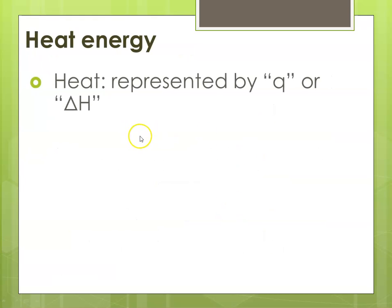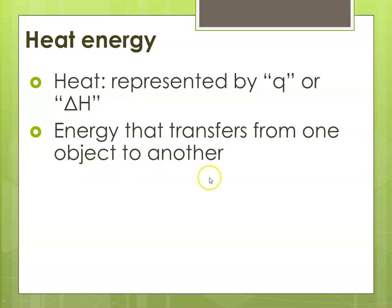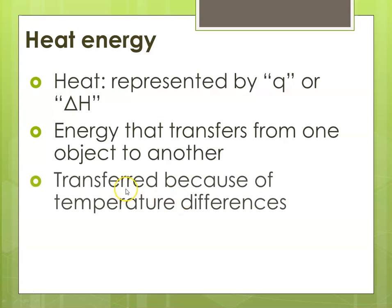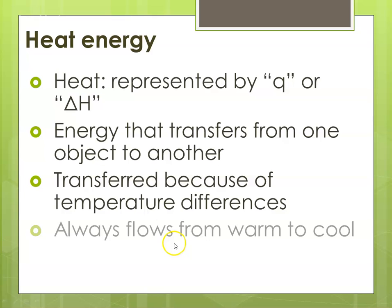In chemistry, heat energy has special notation. Heat is represented by the letter Q (mostly lowercase) and also by delta H — that funny little triangle H. The triangle is the Greek letter delta, and in chemistry, physics, or math it means change. So delta H means change in heat. Energy that transfers from one object to another is heat energy, and it always flows from an area of greater to lesser concentration — transferred because of differences in temperature. It always flows from warm to cool, or hot to cold.